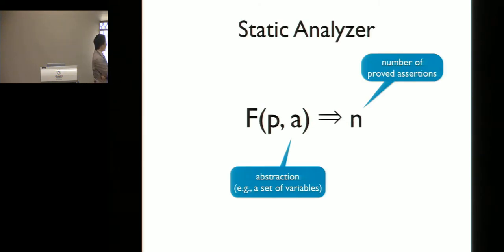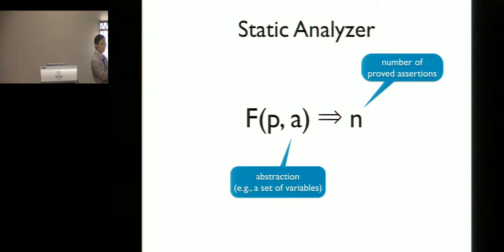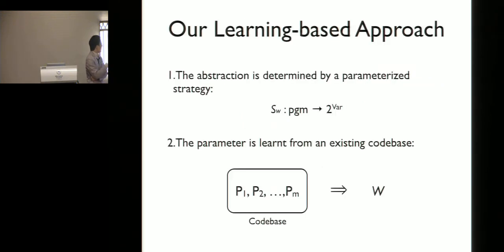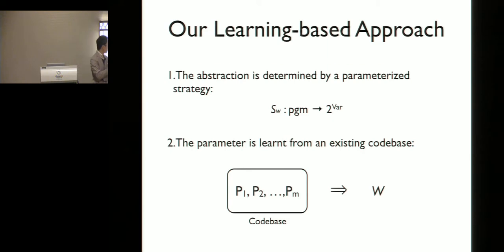We assume the static analyzer F takes two parameters: a program P to analyze, and its abstraction — for example, a set of variables for flow-sensitivity. The analyzer returns a natural number indicating the number of proved assertions in P. The main part of our approach has two steps: the parameterized strategy S, and learning the parameter W of the strategy from the code base.